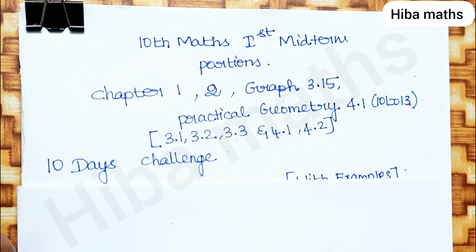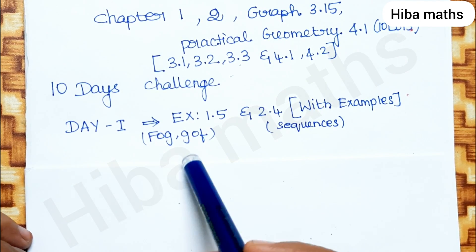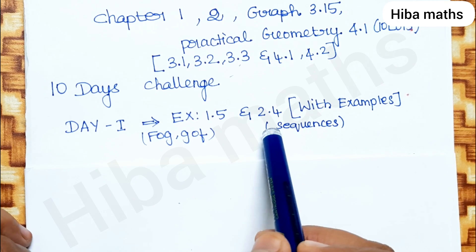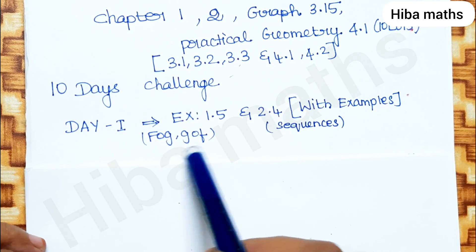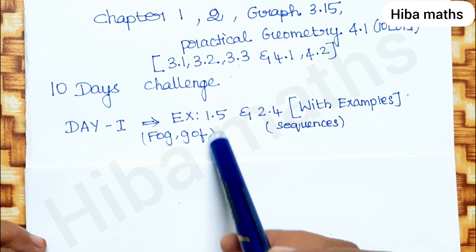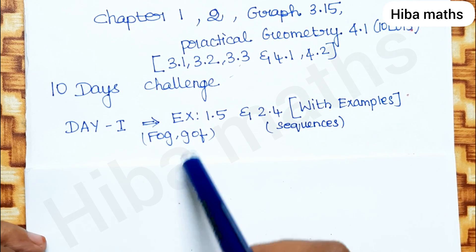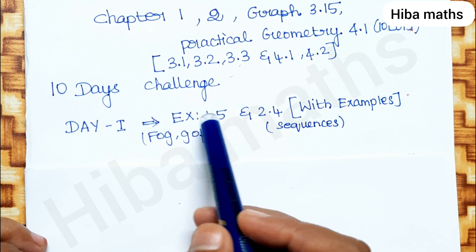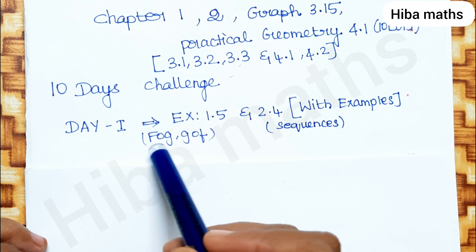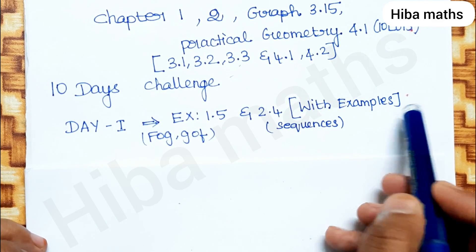For Day 1, there is an exercise in the first chapter and an easy exercise in the second chapter. In the first chapter, there is exercise 1.5 — F of G, G of F — which is the main exercise. There are questions for the public exam, so exercise 1.5 is important. We can do the same examples.